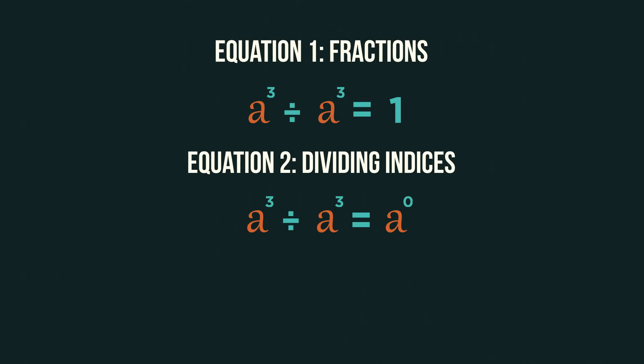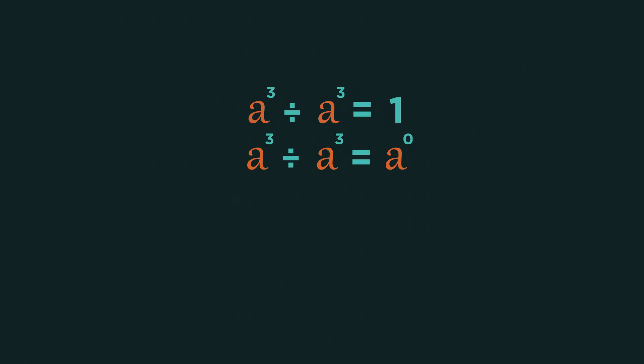We've done the same calculation in two different ways. Therefore, the two answers must equal one another. So combining these two things, anything to the power of zero equals one.